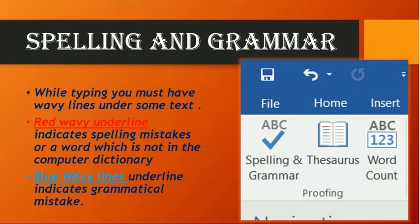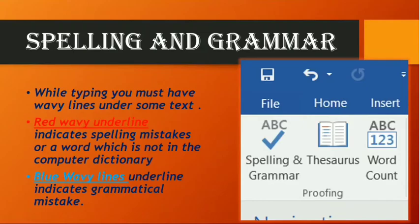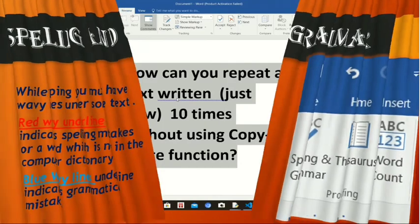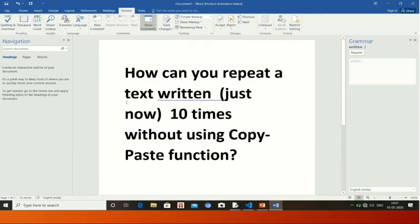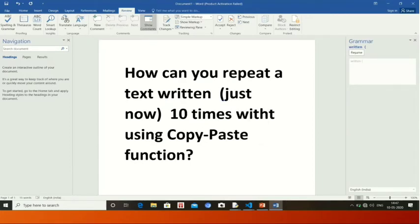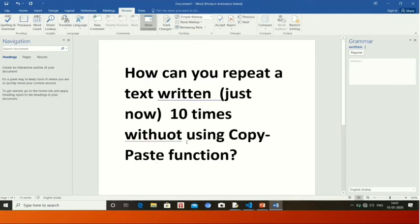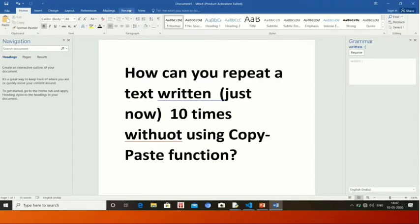Moving on to our next topic: spelling and grammar. You have seen that when you are typing any word, sometimes it appears with a red color underline or a blue color underline. The red color underline shows a spelling mistake, and the blue color underline shows a grammar mistake. Now see how it works with this example. Here in MS Word is written: 'how can you repeat a text written just now 10 times without using copy paste function.' I am changing the spelling of 'without' — see it appears with a red underline. And 'written' appears with a blue underline, meaning there is a mistake.